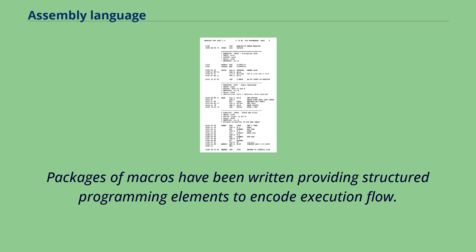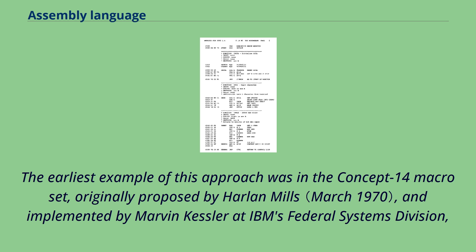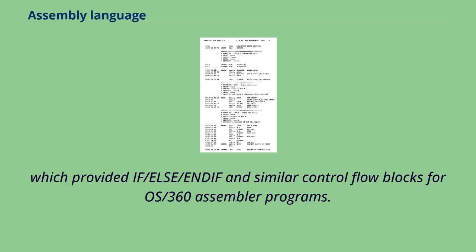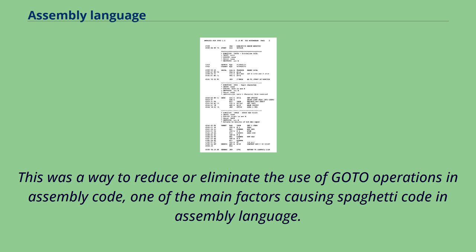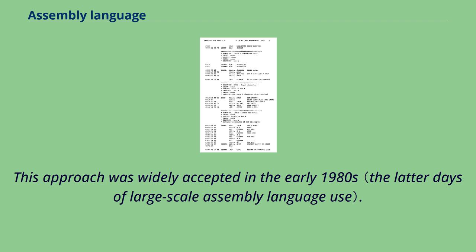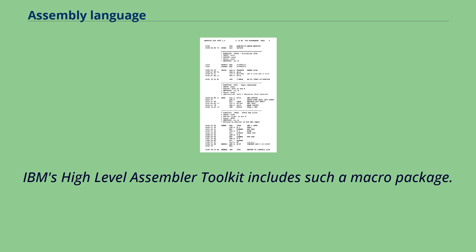Packages of macros have been written providing structured programming elements to encode execution flow. The earliest example of this approach was in the Concept 14 macro set, originally proposed by Harlan Mills and implemented by Marvin Kessler at IBM's Federal Systems Division, which provided if/else/endif and similar control flow blocks for OS/360 assembler programs. This was a way to reduce or eliminate the use of go-to operations in assembly code, one of the main factors causing spaghetti code in assembly language. This approach was widely accepted in the early 1980s, and IBM's high-level assembler toolkit includes such a macro package.